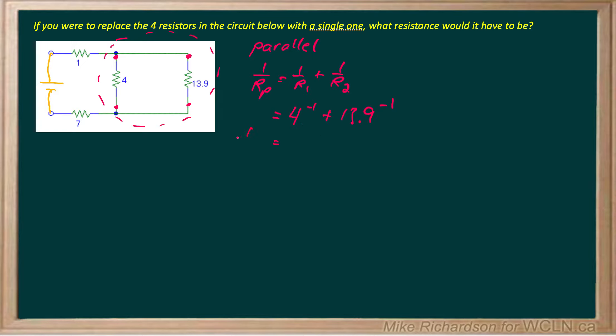And just remember that's not your answer, that's 1 over your answer. So whatever you get when you add 4 to the minus 1 plus 13.9 to the minus 1, you still have to flip it one more time.